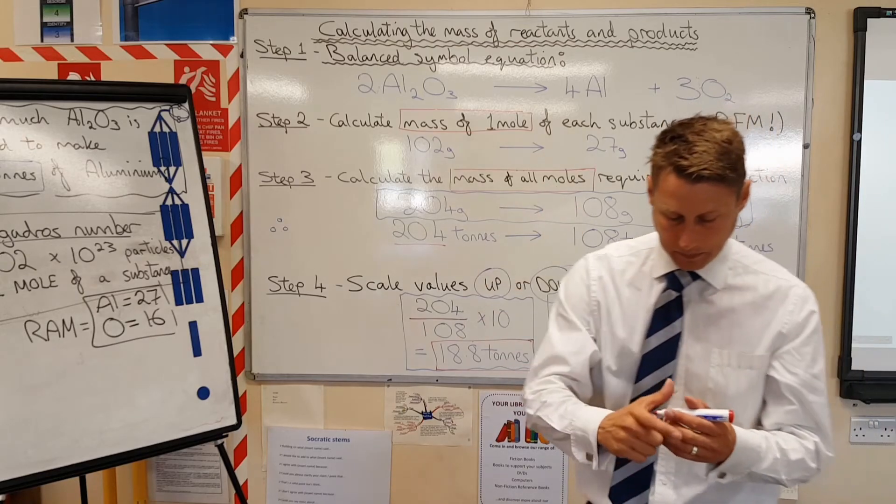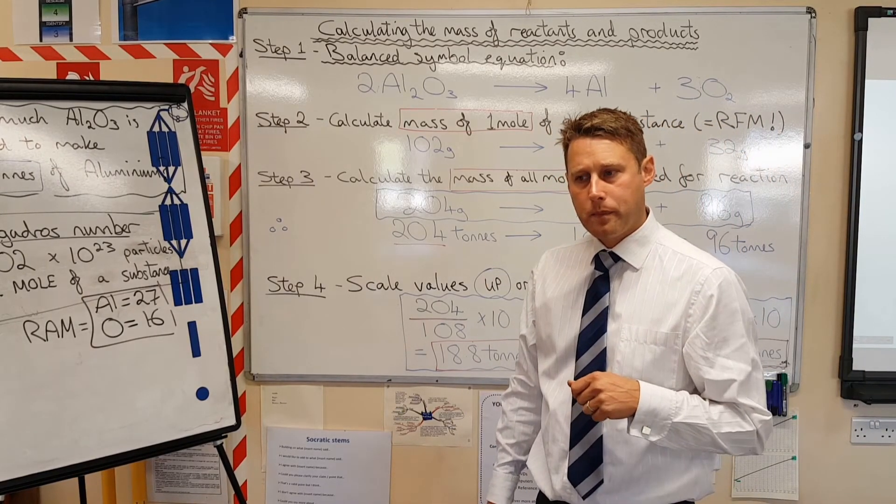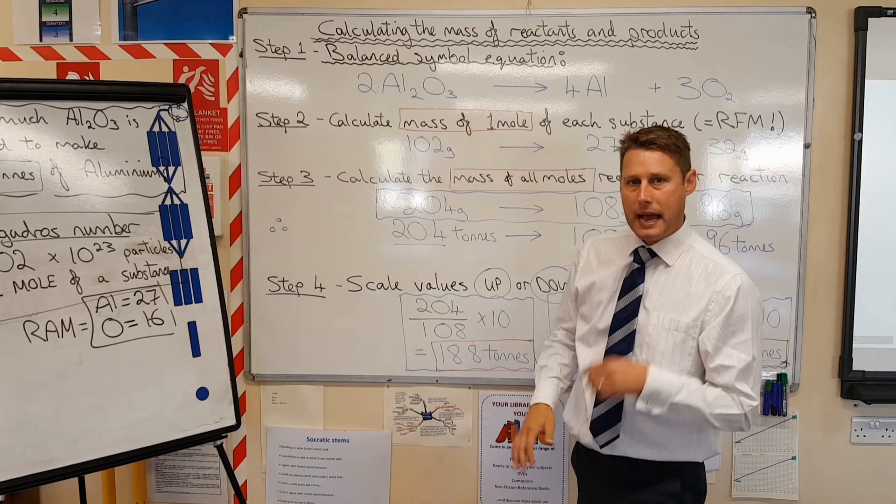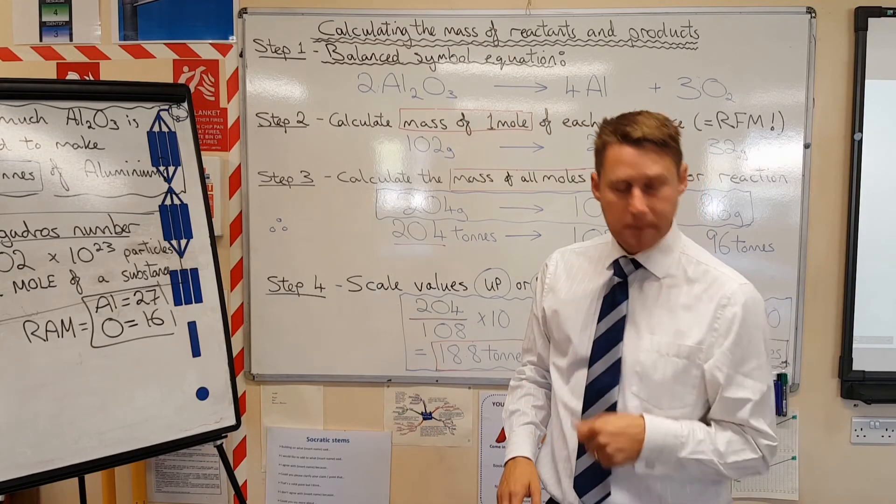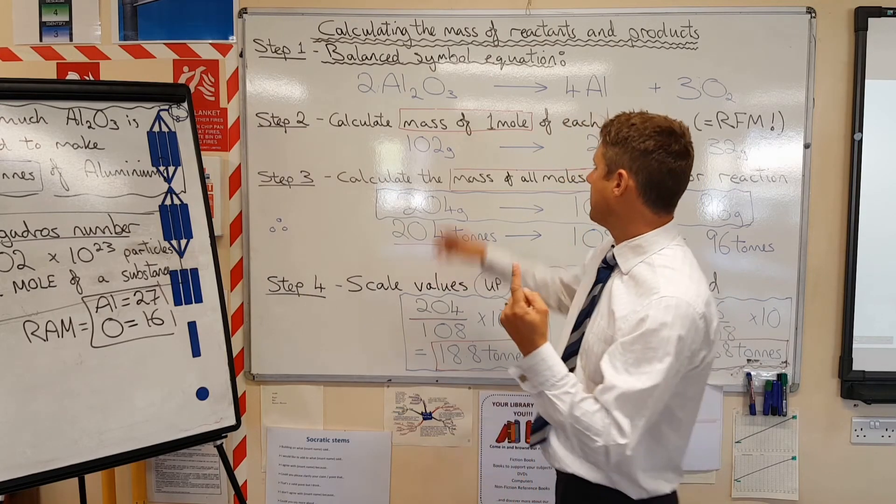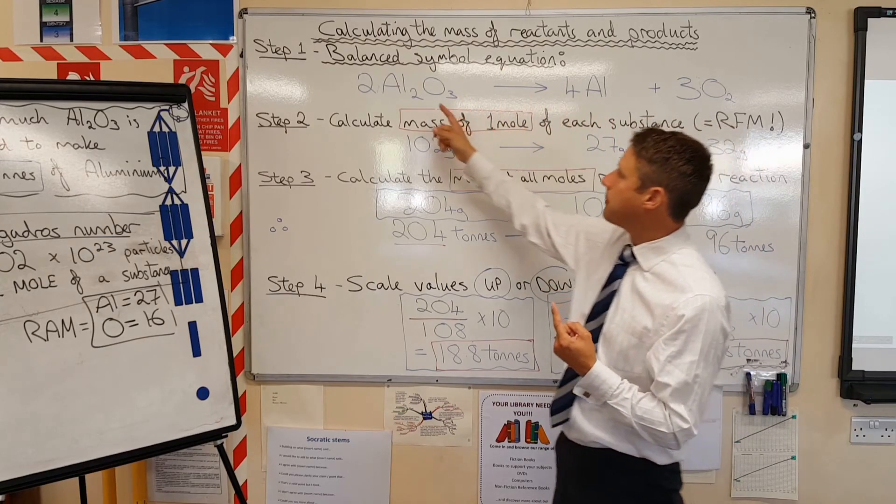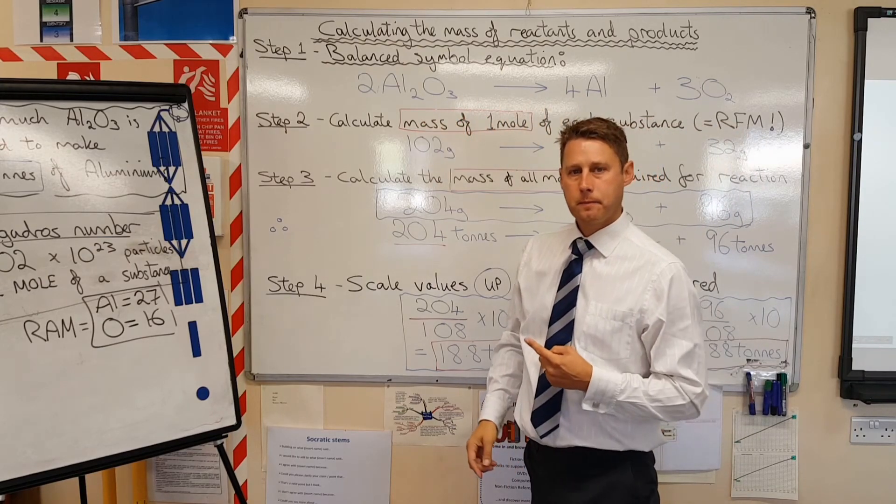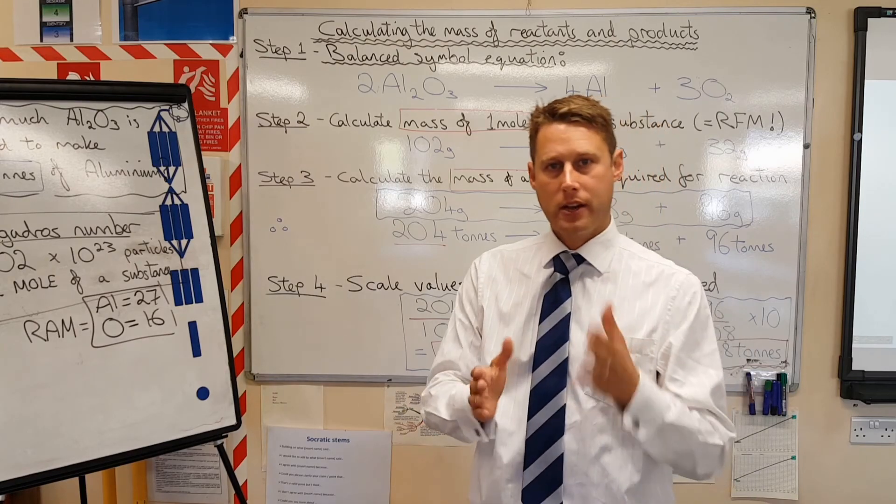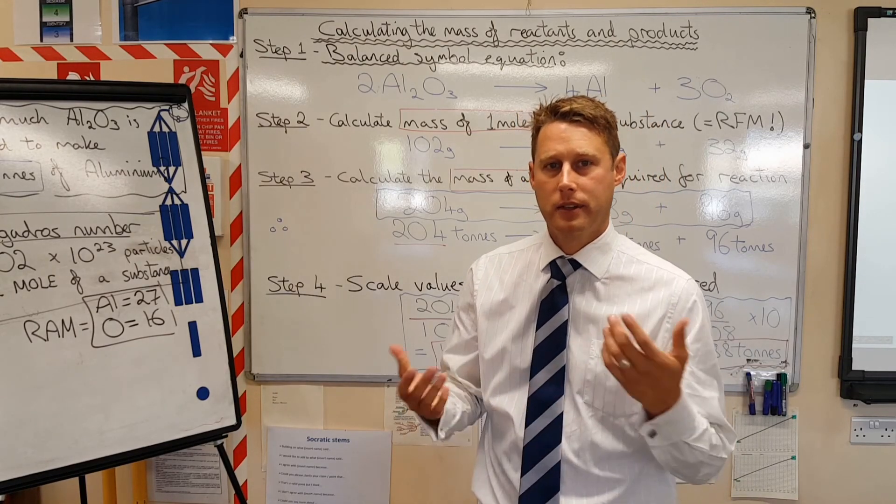So, hopefully that helps. If you want to try one for yourself, see if you can work out, using this method, how much aluminum you can make from just one tonne of aluminum oxide. How much aluminum can you make from just one tonne? Have a go. If you come out with 0.53, you've done a good job.